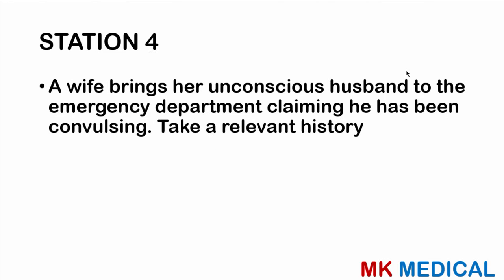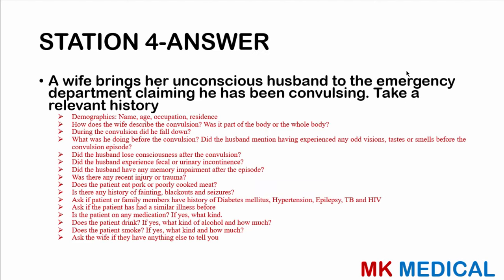Station 4. A wife brings her unconscious husband to the emergency department, claiming he has been convulsing. Take a relevant history. Here comes the answer. Start with demographics — name, age, occupation, and residence. Occupation and residence are very important because where an individual stays could be the cause of the convulsion — for example, if they're in an area endemic for malaria, the convulsion could be due to cerebral malaria. Ask what happened before, during, and after the convulsion.